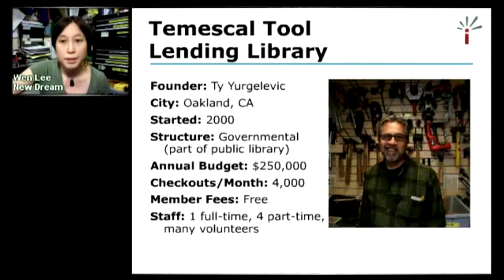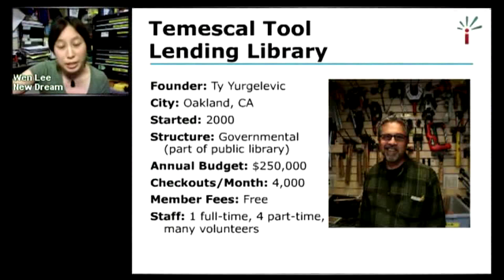The Temescal Tool Library in Oakland, California started in 2000. It is a governmental organization — part of the public library in the city of Oakland. The annual budget is considerably larger than the nonprofits, at about $250,000 a year. There are 4,000 checkouts a month. Membership is free as long as you have a library card. They have one full-time staff, four part-time staff, and many, many volunteers.